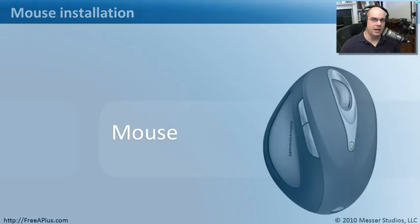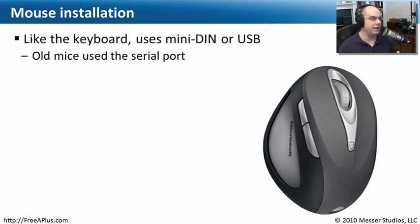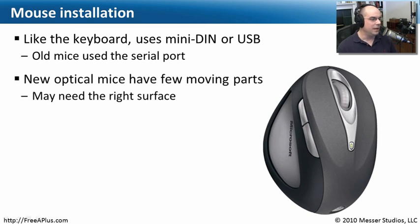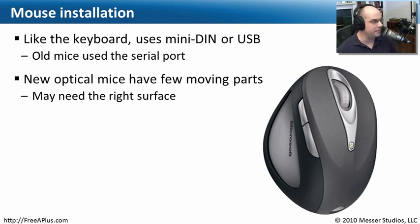Mice are also very common input devices, and similar to keyboards, they might also ship with both mini DIN and USB interfaces. Really old mice used the 9-pin serial port, but we don't see many of those anymore. Newer optical mice don't have moving parts — it's all done with an LED or laser display inside the mouse. Sometimes you need the right surface; if you're using an optical mouse on a glass tabletop, it may not work. There are even mice specialized for use on glass tabletops.